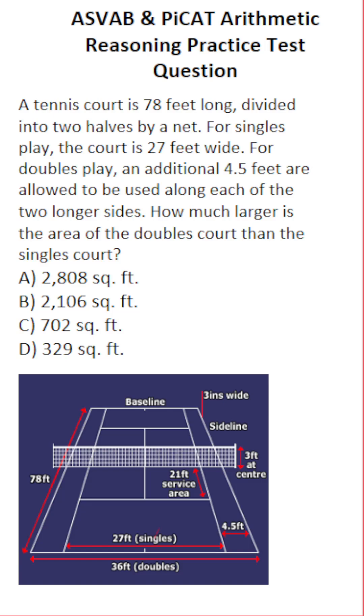ASVAB and PICAT Arithmetic Reasoning Practice Test Question. A tennis court is 78 feet long divided into two halves by a net. For singles play, the court is 27 feet wide. For doubles play, an additional four and a half feet are allowed to be used along each of the two longer sides. How much larger is the area of the doubles court than the singles court?